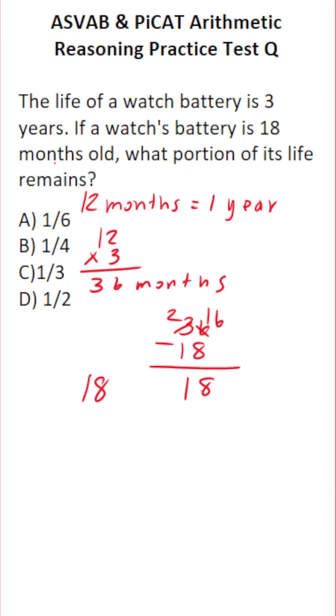What portion of its total life is that? Well, we're going to divide it by its 36-month lifespan. And you should see that 18 and 36 have a common factor of 18. 18 divided by 18 is 1. 36 divided by 18 is 2. So it has half of its life left. This one is going to be D.